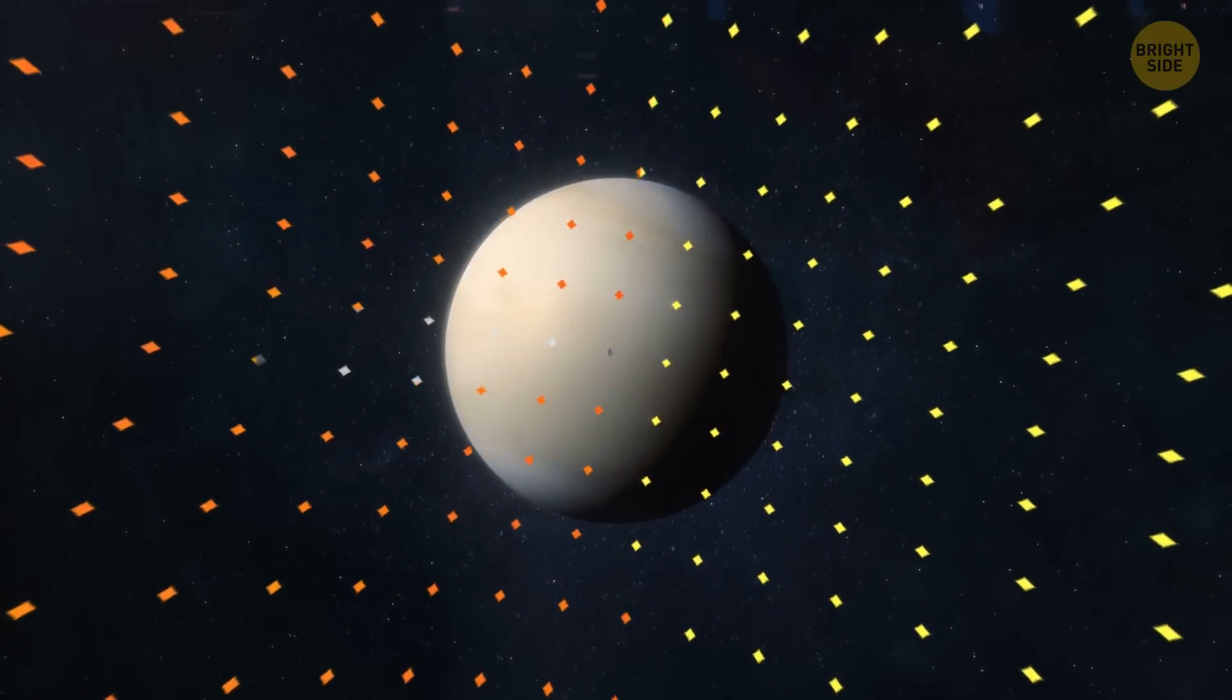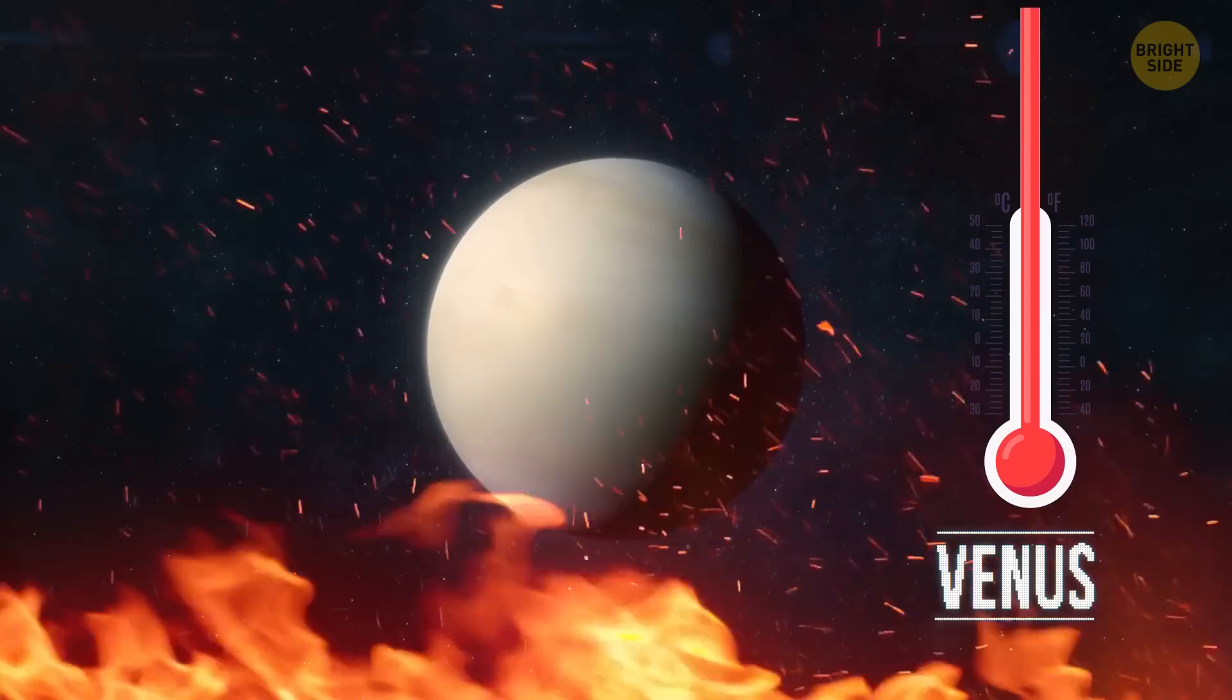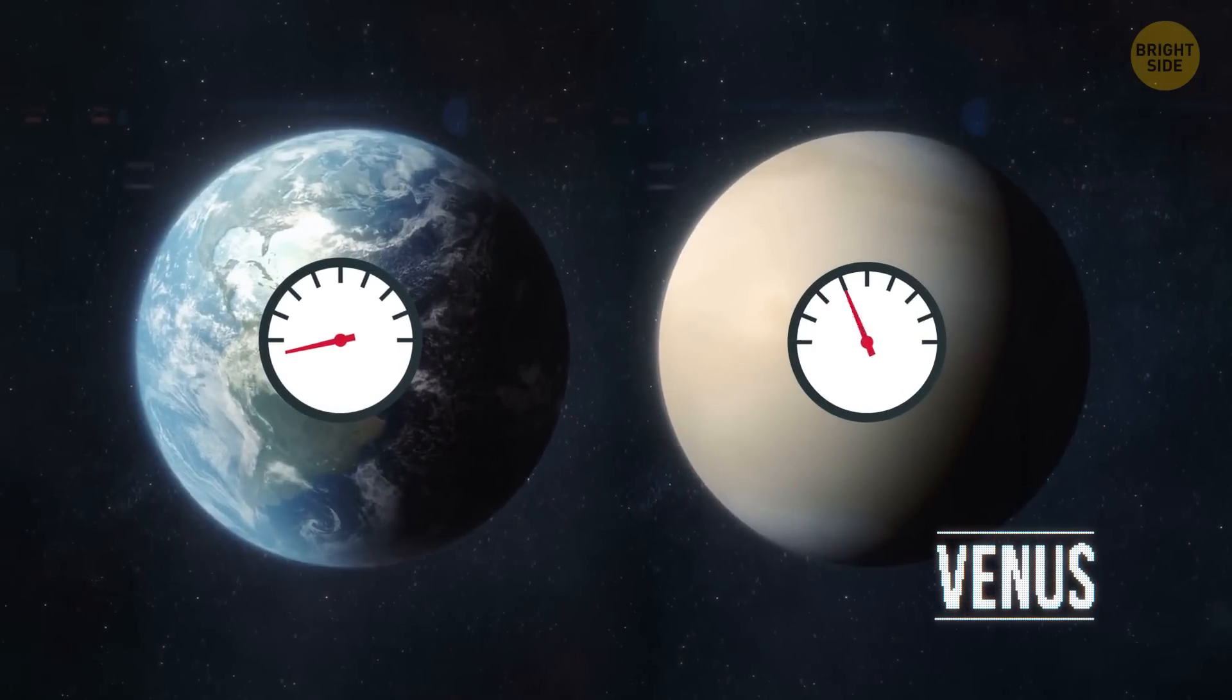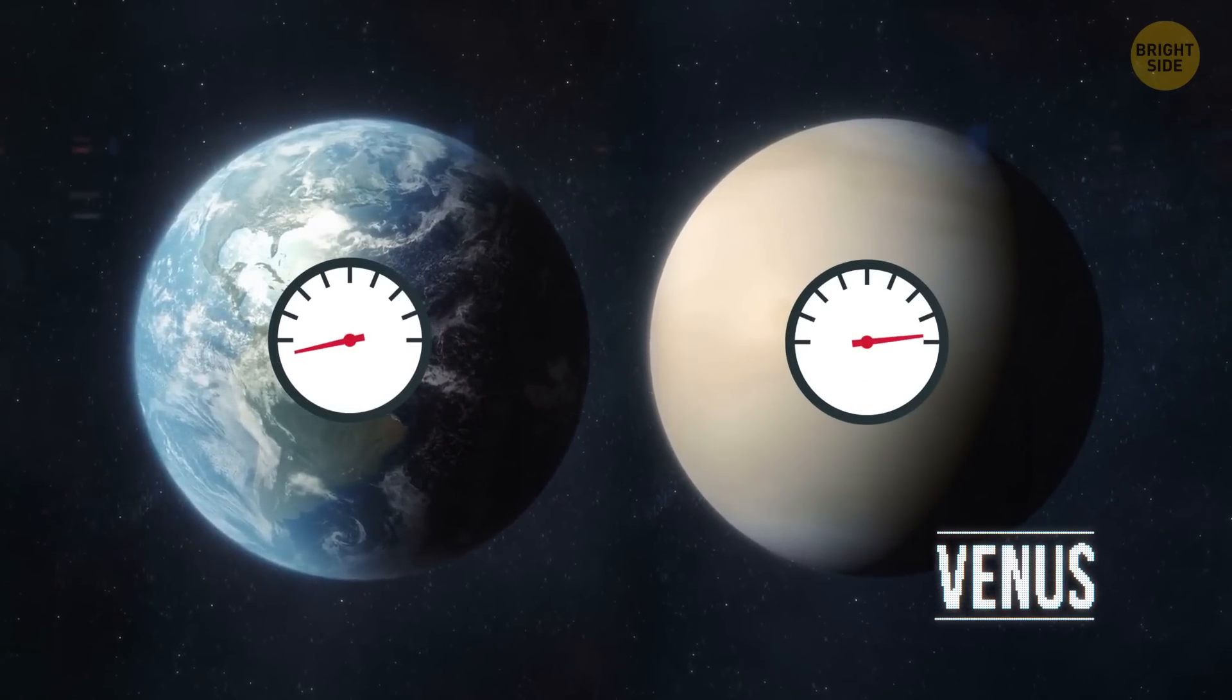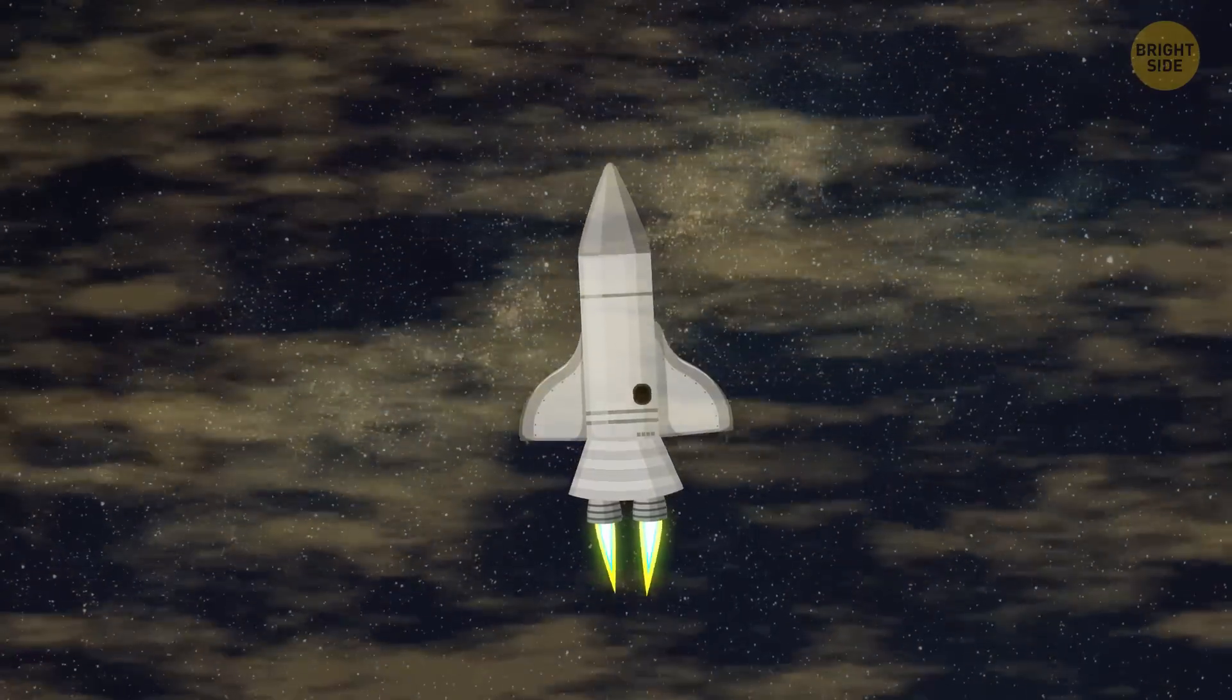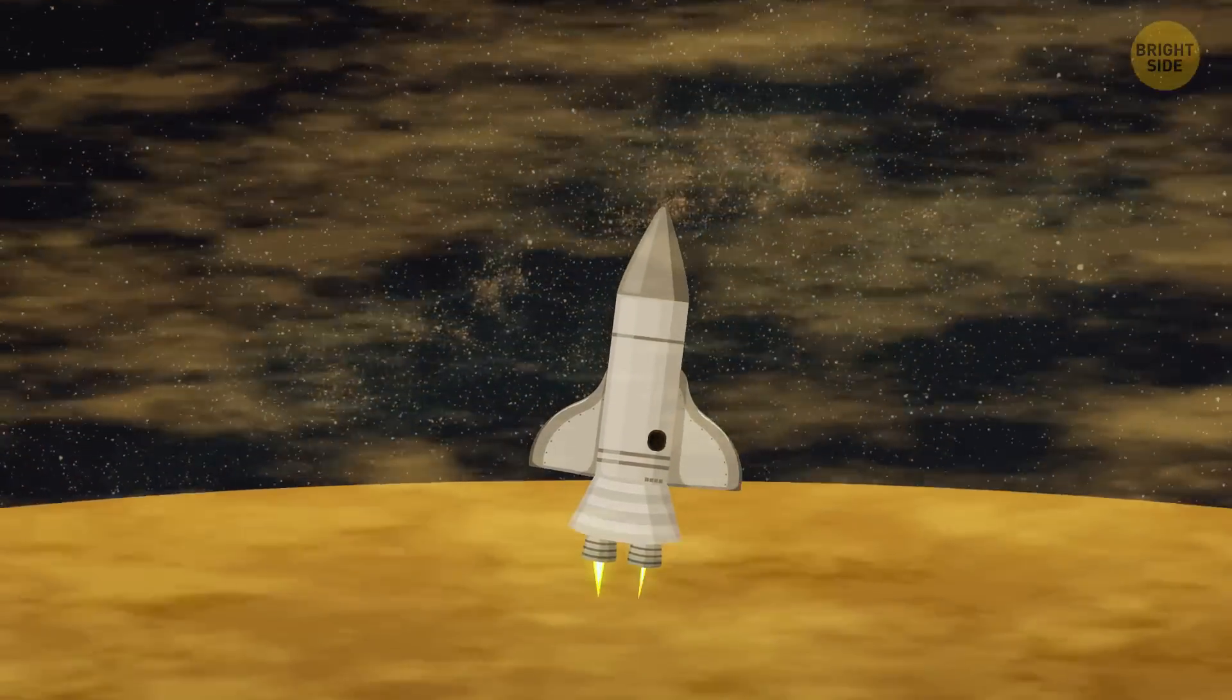The next planet you're going to explore is Venus. It's the hottest planet in the solar system. The average temperatures there are high enough to melt lead. The pressure on the planet is 90 times greater than that on Earth. Your spacecraft is traveling through thick clouds of sulfuric acid.